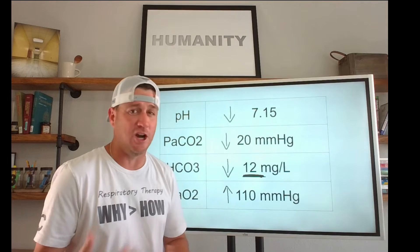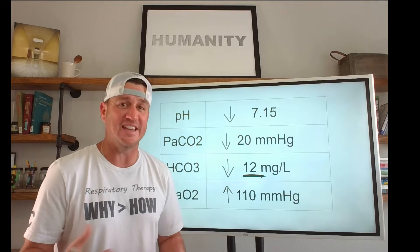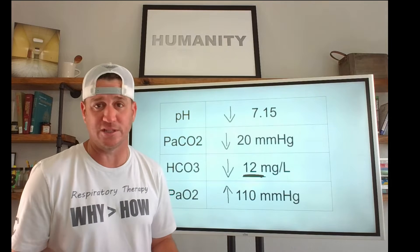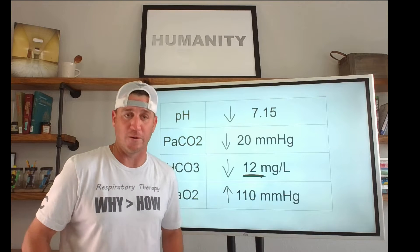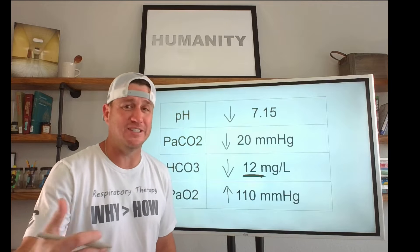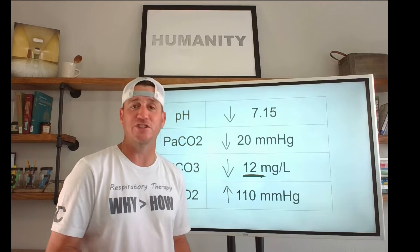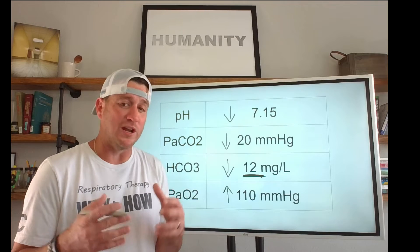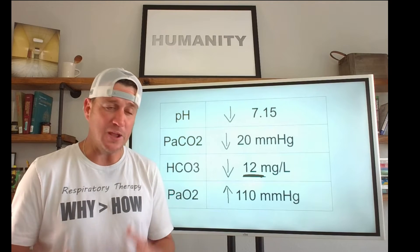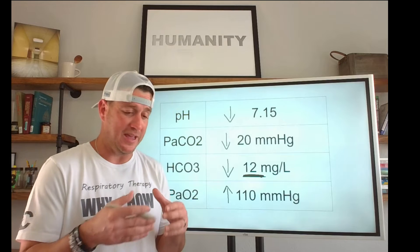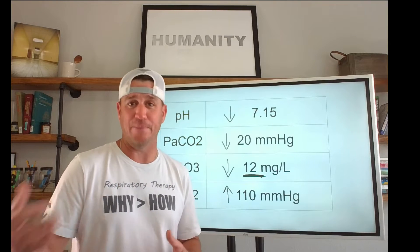A couple of disease processes come to mind here. The major one is probably DKA — diabetic ketoacidosis — when perhaps you've seen this patient before. How is that patient breathing? Well, this takes us back to our early patient assessment learnings where we learned about Kussmaul's respirations. Kussmaul's breathing is related to a very deep and very fast breathing pattern.